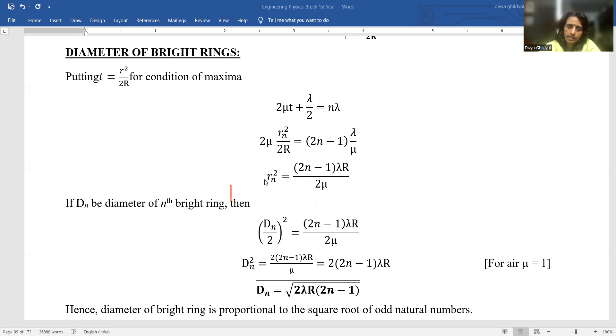So, instead of RN, I can write DN/2 whole square equals (2N-1)λR/2μ. For air, μ = 1, so diameter of the Nth ring is DN = √(2λR(2N-1)).